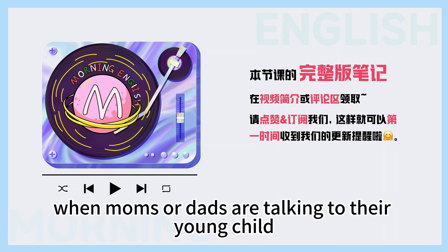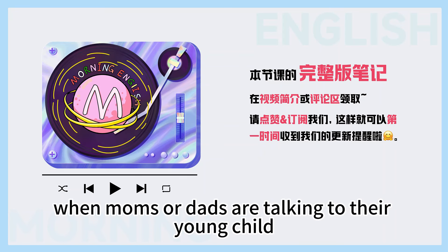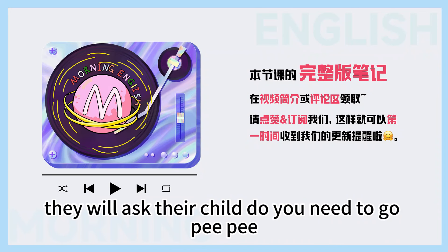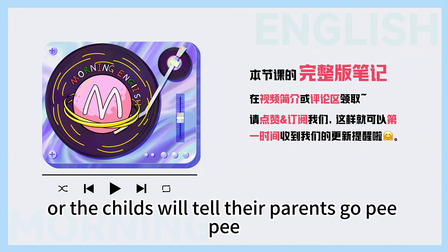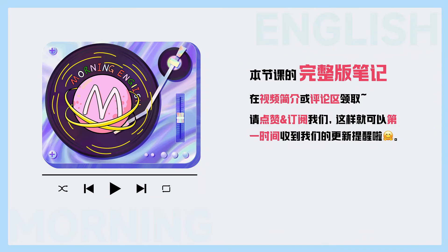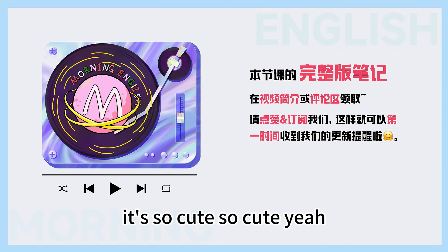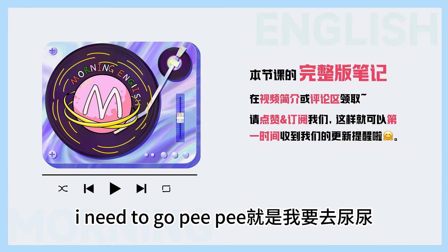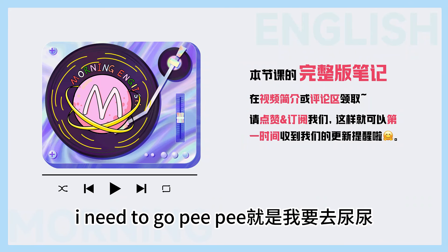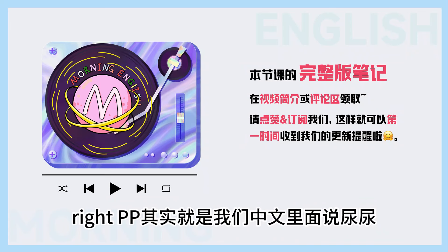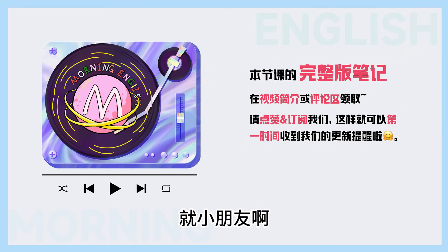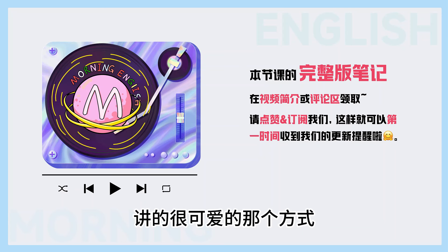When moms or dads are talking to their young child, they will ask their child, 'Do you need to go pee-pee?' Or the child will tell their parents 'go pee-pee,' which means 'I need to pee.' It's so cute. 太可爱了. I need to go pee-pee. 这是我要去尿尿, right? Pee-pee 就是我们中文里面说尿尿，就小朋友讲的很可爱的那个方式。